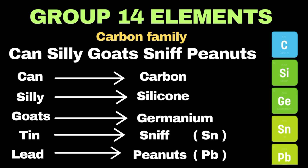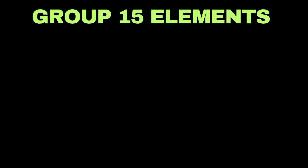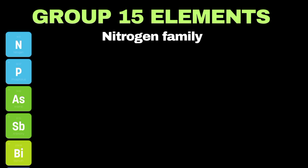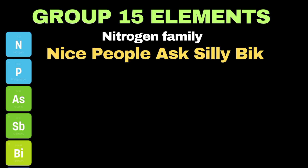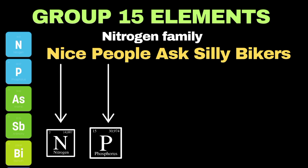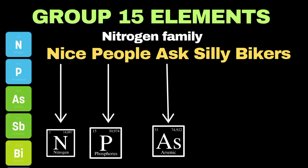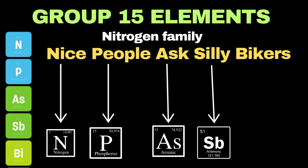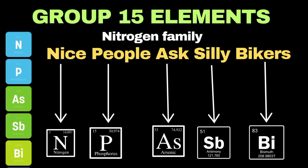Now let's understand how we can easily remember group 15 elements, which is called the nitrogen group. My personal trick is: 'Nice people ask silly bikers.' Here 'nice' represents nitrogen, 'people' represents phosphorus, 'ask' denotes arsenic, 'silly' is used for antimony (symbol Sb), and 'bikers' represents bismuth.